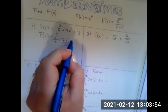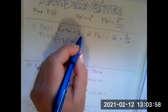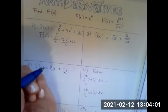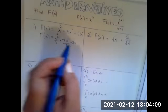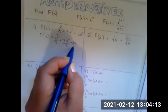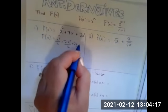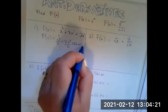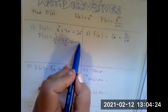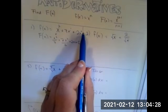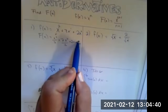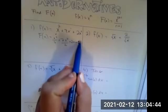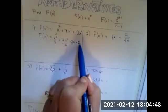The antiderivative of two has to be two X, right? Because two by itself is like two X to the zero. If we add one to that zero we get one, and then we divide by one — though we don't really need to show that. And then we always have to add a constant C, because when you take the derivative of a constant, that derivative is zero. So C could be zero, one, a hundred, a million, negative thousand — we just don't know. We always add C as a placeholder.